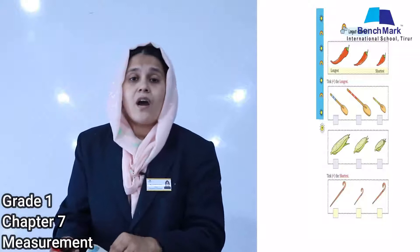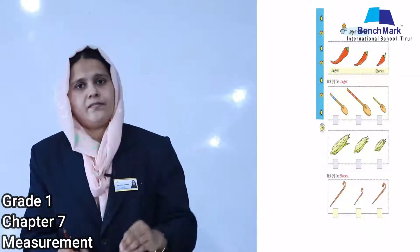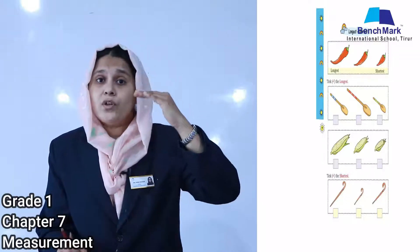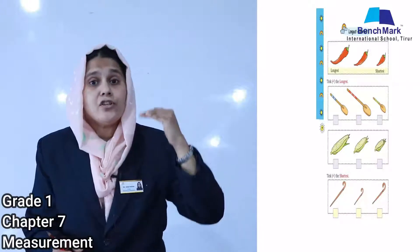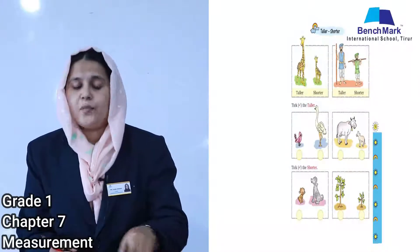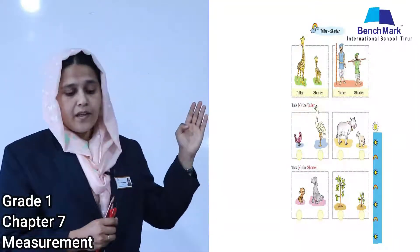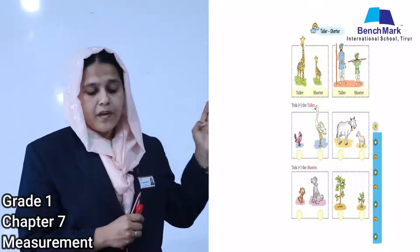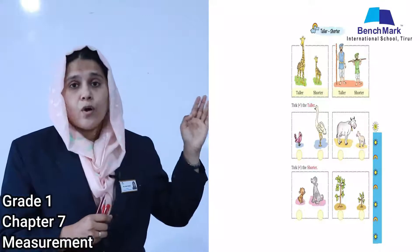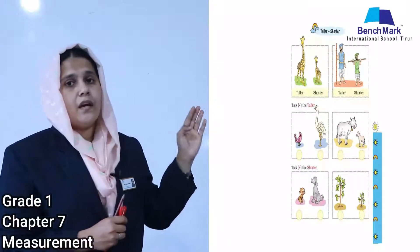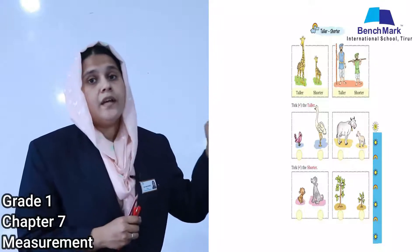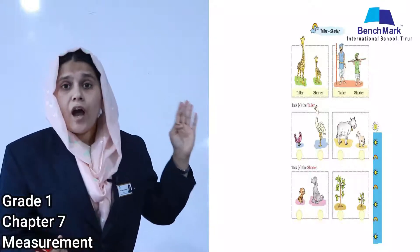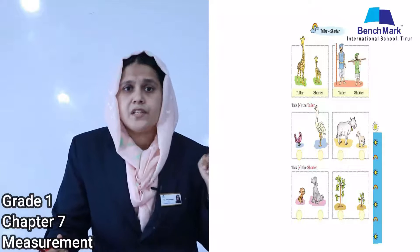The next concept is comparing objects according to their height — taller and shorter. Take page number 95. They ask you to tick the taller one. They have given a bird and an ostrich — you have to tick which one is taller. Yes, the ostrich is the taller one.